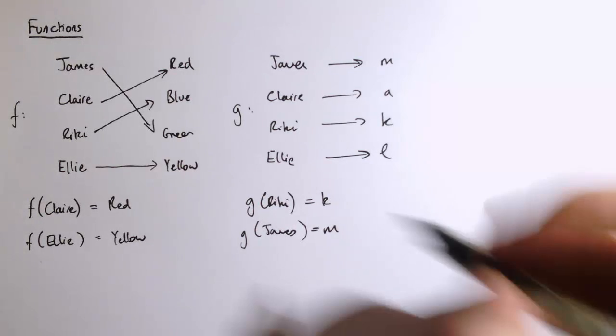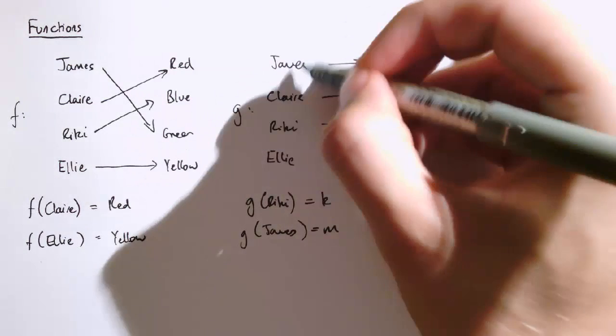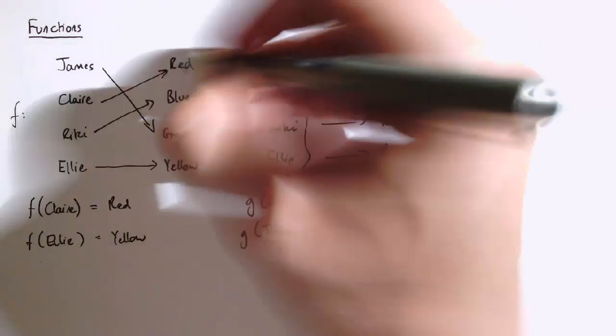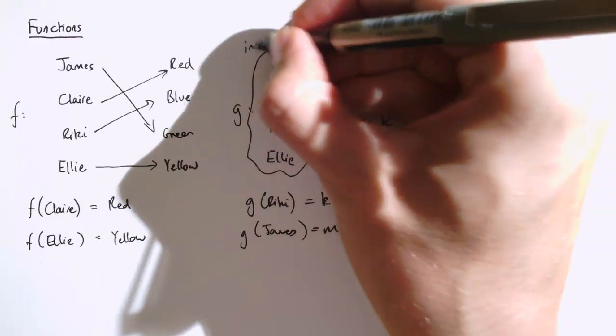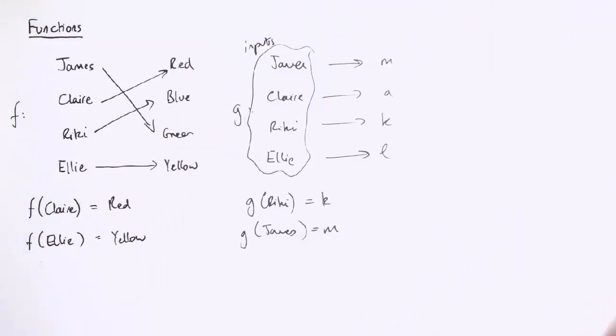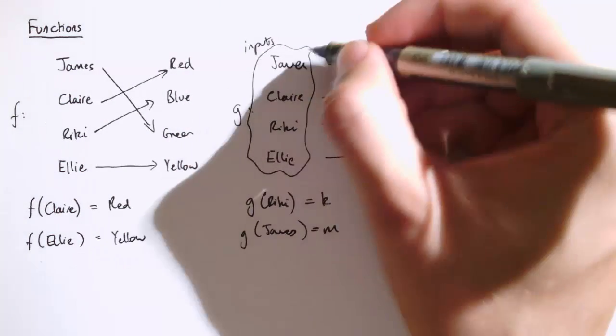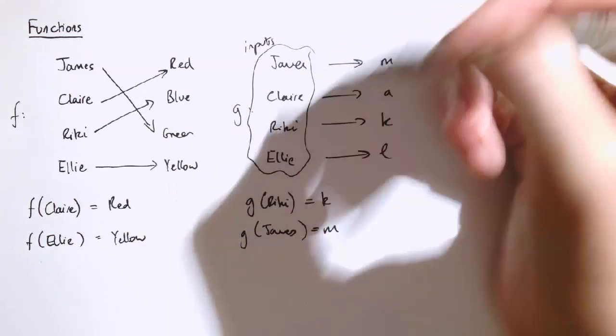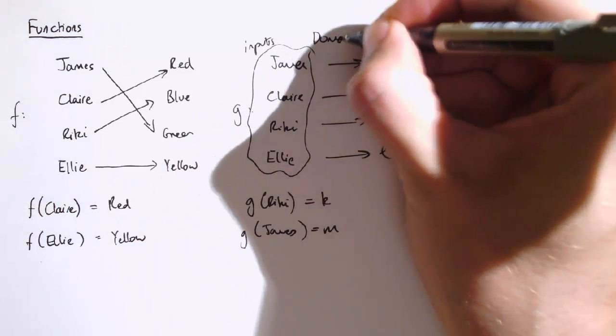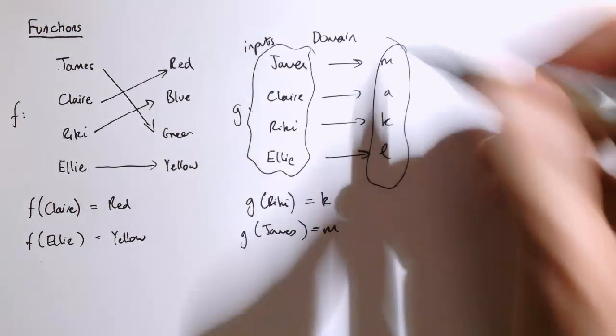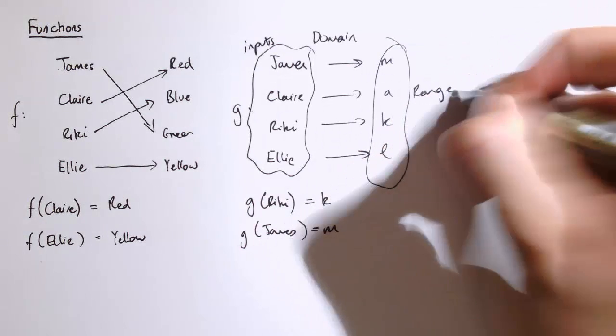Just to introduce a bit of notation. The set of things that we put into the function, here it was names of people, these inputs. This set, i.e. all of these together, James, Claire, Ricky and Ellie is called the domain of the function. And the set of possible outputs of the function is called the range.